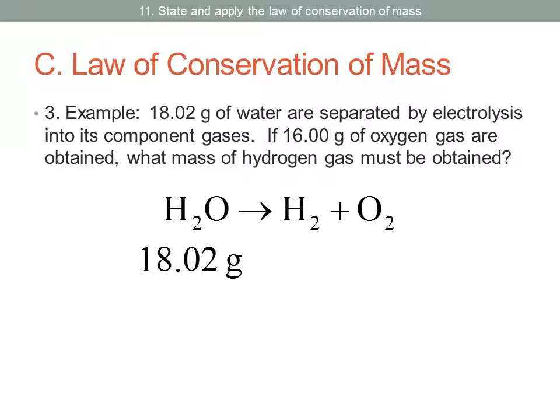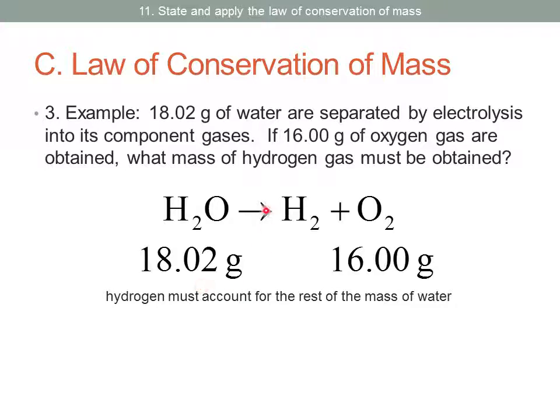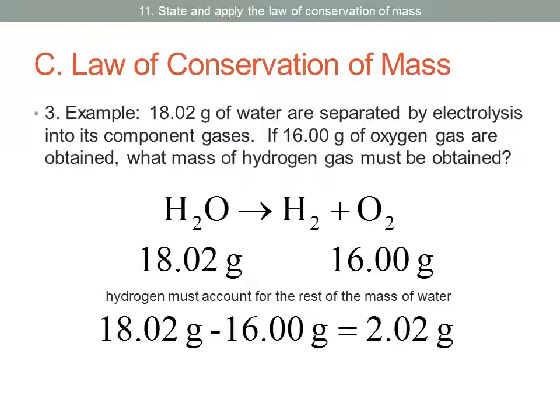So what we're told is we start with 18.02 grams of water, and then we collect 16.00 grams of oxygen, and we want to know how much hydrogen gas is also there. Well, we know that the hydrogen has to account for the rest of the water that wasn't accounted for by the oxygen. If we started with 18.02 grams, we have to end with 18.02 grams. Notice this arrow here separates our reactants and products. So whatever mass we have on the left side has to equal the mass on the right side in total. Well, obviously we're short on the right side, so if we just find the difference, the difference being 2.02 grams, that would tell us the mass of hydrogen that we would find.